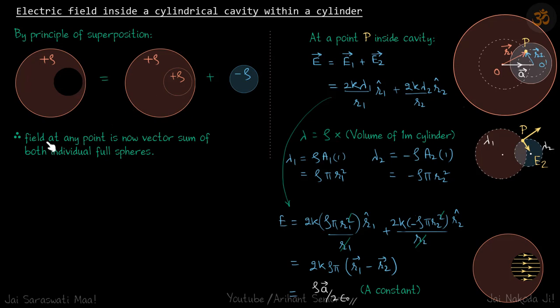Now we can say that field at any point is now vector sum of both individual full cylinders. E at any point inside the cavity is now E1 plus E2. E1 is due to the full cylinder and E2 is due to the negative cylinder which is filling the cavity. This is also imagined to be at the same place.